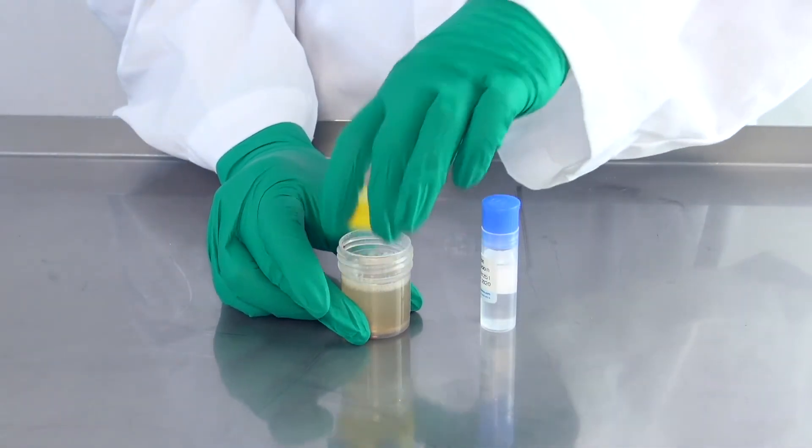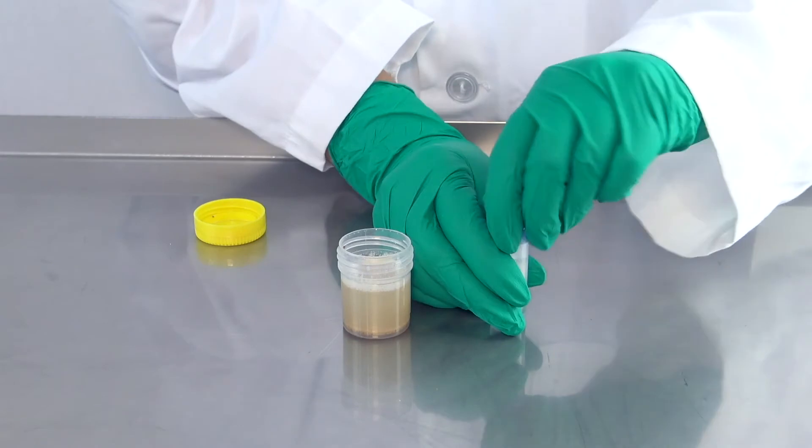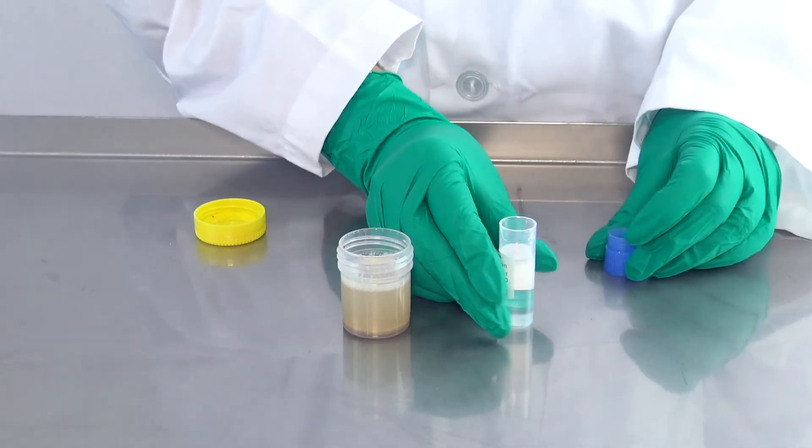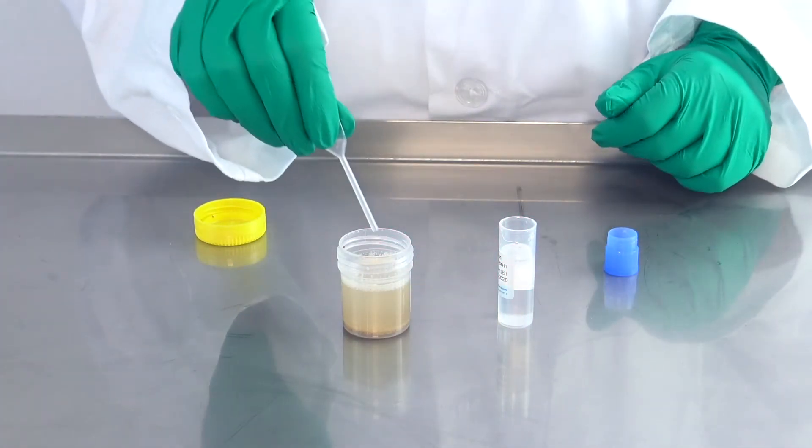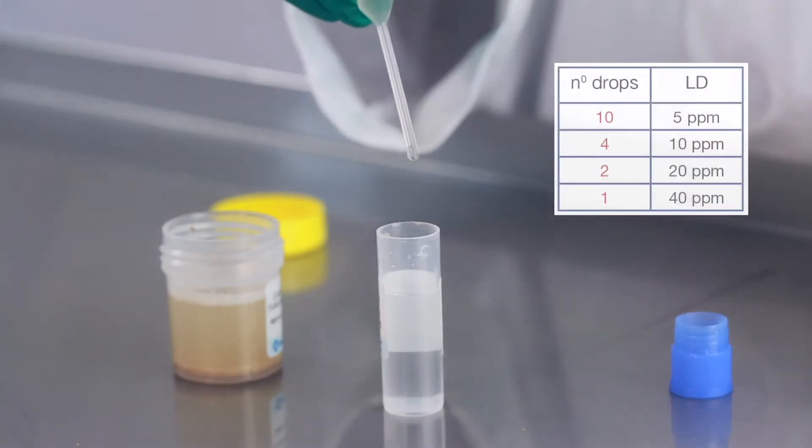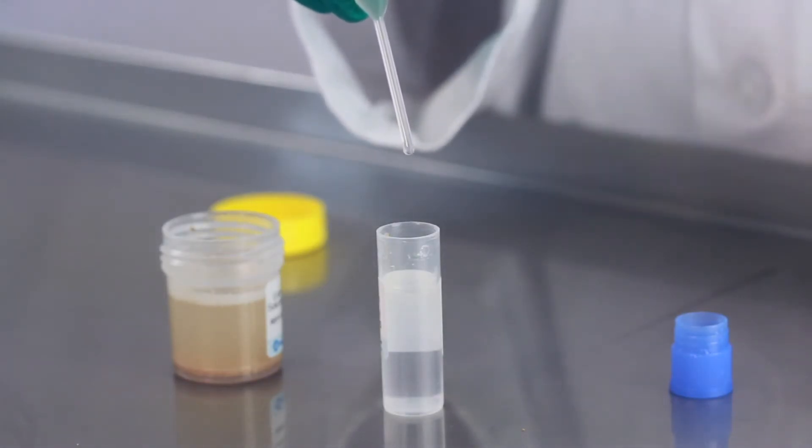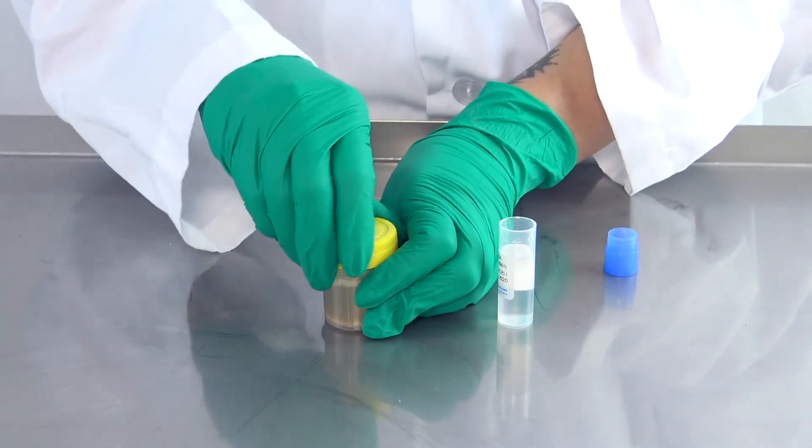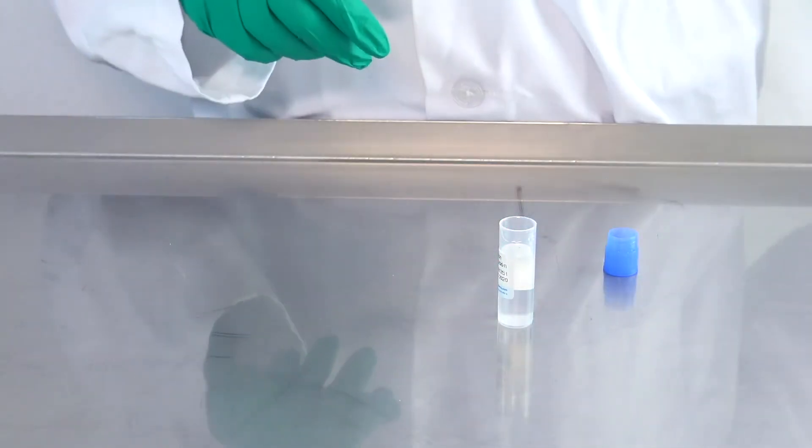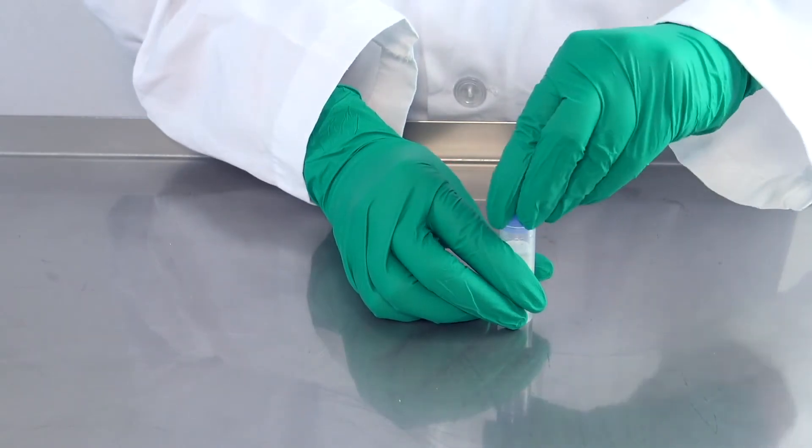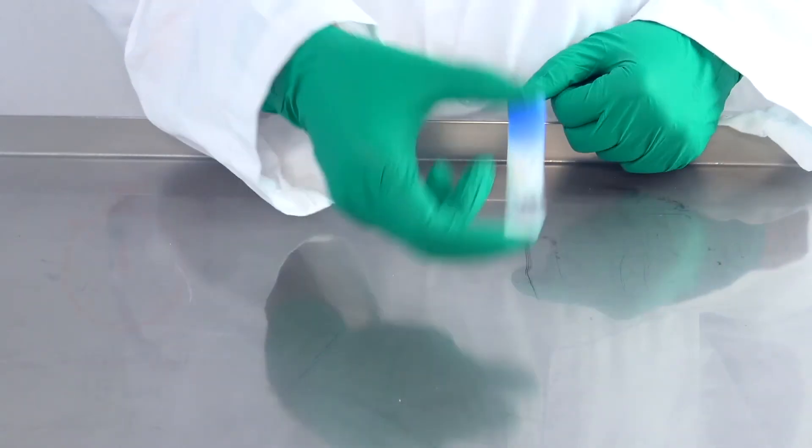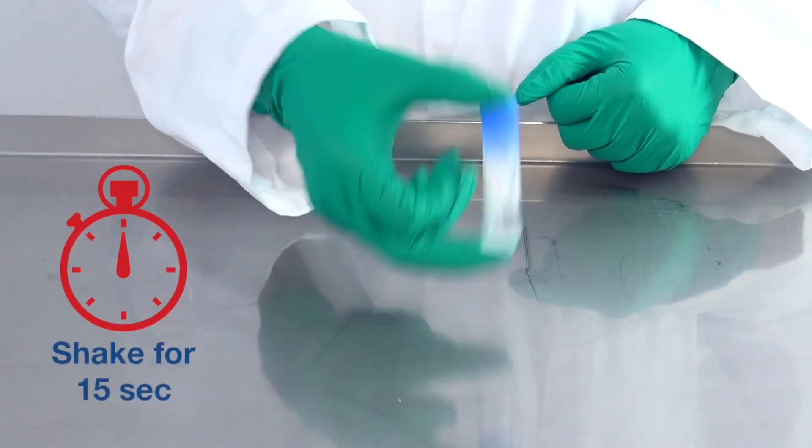Open the extraction bottle with the yellow cap and one dilution vial with the blue cap. Take a disposable plastic pipette and using the number of drops indicated on the manual, transfer the liquid from the extraction solution with the yellow cap to the dilution vial with the blue cap. Dispose of the used pipette. Mix softly for 15 seconds.